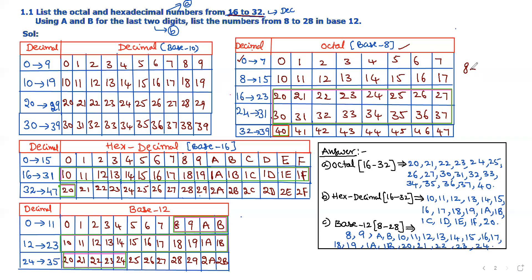To convert decimal 8 to octal, we find how many 8s are in the decimal number. 8 minus 8 times 1 equals 0, so the remainder is 0 and the carry is 1, giving the octal equivalent 10. In this way we can find any octal value for a given decimal number. From 16 to 23 the octal values are 20 to 27, from 24 to 31 it is 30 to 37, and from 32 onwards it starts at 40 to 47.